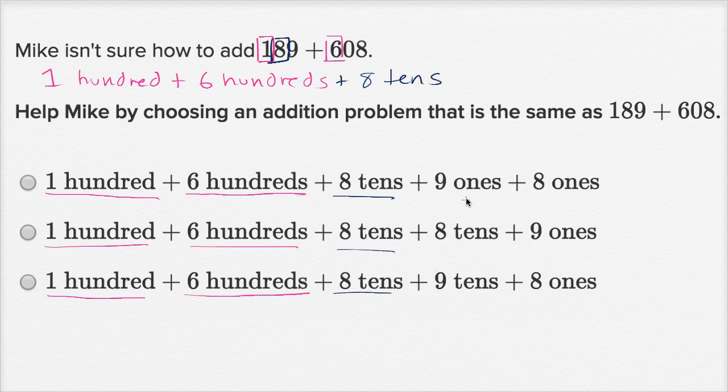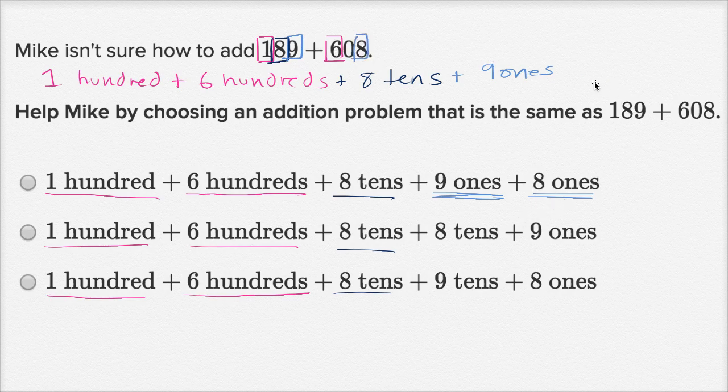And then what else do they have? Well, this is where they all start to be a little bit different. So let's go one by one. This next one has nine ones. Where are they getting that from? Well, in 189, the nine is in the ones place. So it's reasonable to write nine ones. And then finally, they have eight ones. Where did they get that from? Well, in 608, the eight is in the ones place. So it's eight ones. So this first choice is looking quite good.